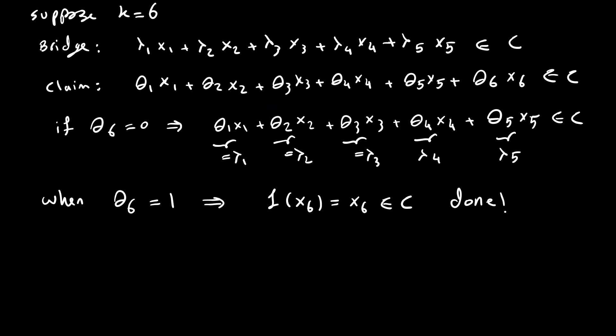So we assume that these non-trivial cases are the case of interest we're looking for. So this is just an example showing when we have a bridge for case k equals 6, we have 5 of them. And then we have to show it for 6. But if θ_6 is 0, then we have 5 points. And by letting λ₁ equals to θ₁, then we are going to have the bridge case, and we're done. And once θ_6 is 1, we can write this as x_6, which is an element of C, and the proof is done.